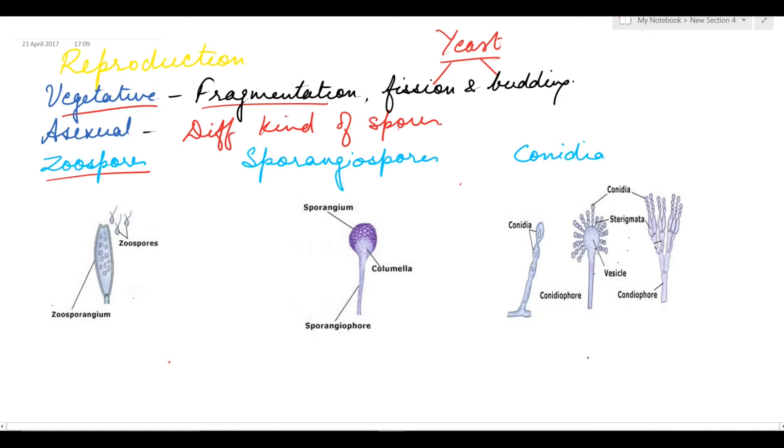First are the zoospores. These are motile spores seen in aquatic fungi, formed inside special structures called zoosporangia.